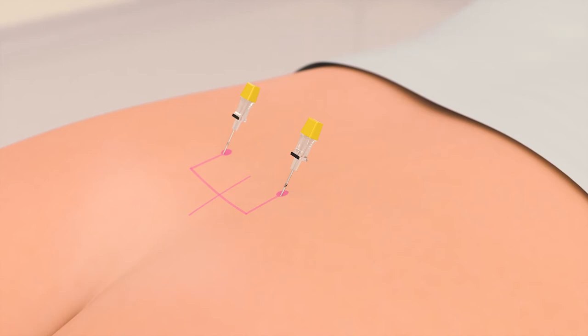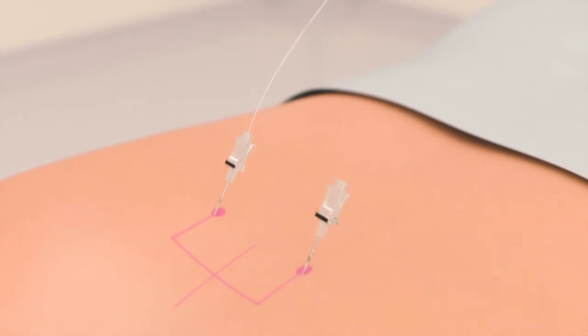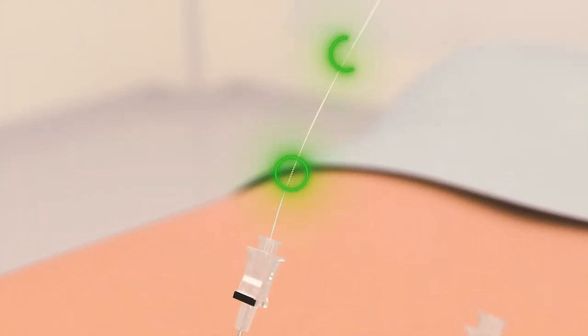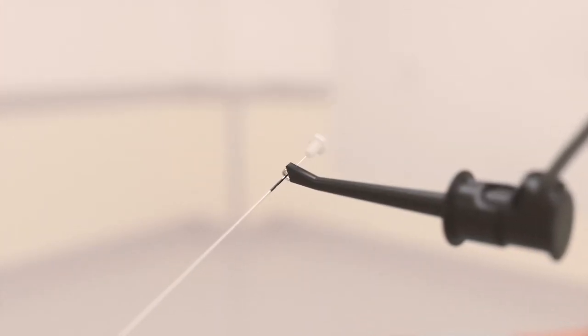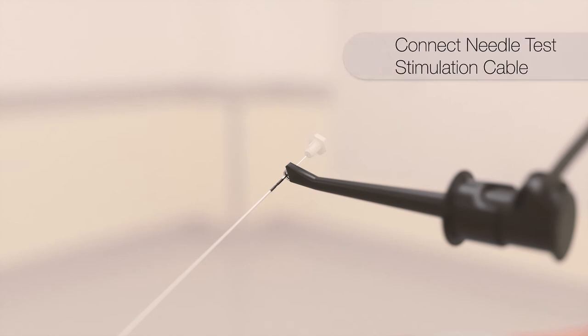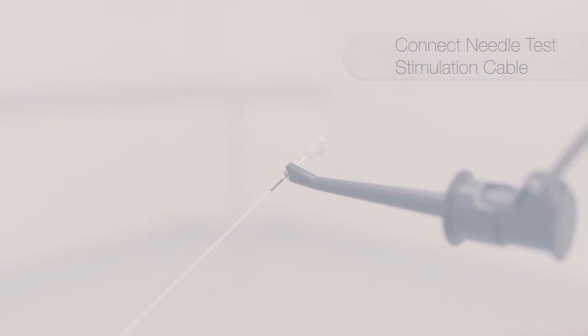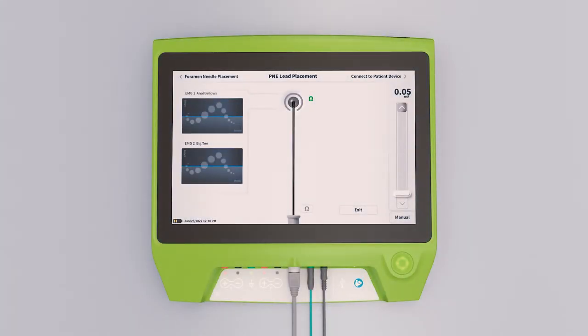The stylets from both foramen needles are removed. The PNE lead has two markings to signify the length of the short 3 1⁄2 inch needle and the long 5 inch needle. The PNE lead is advanced to the respective marker. The needle test stimulation cable is clipped to the uninsulated silver connector pin on the proximal end of the PNE lead. The clinician programmer is used to provide test stimulation to confirm sensory and motor responses.